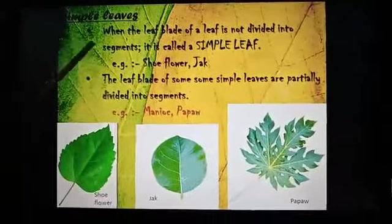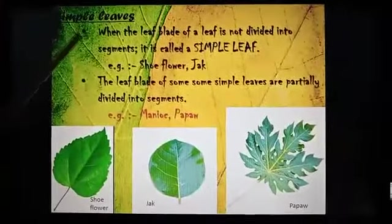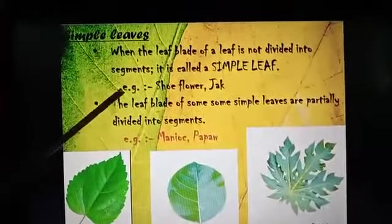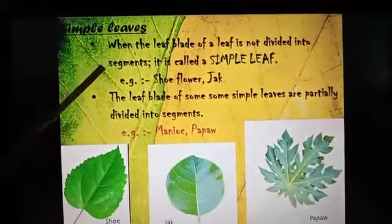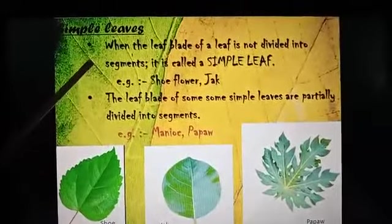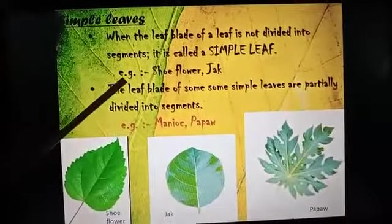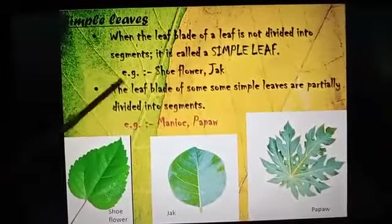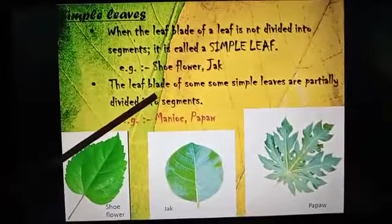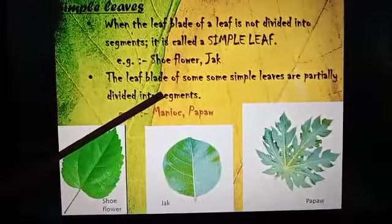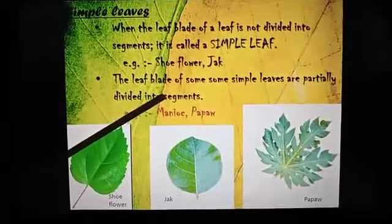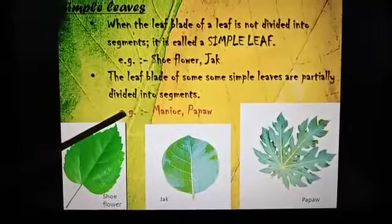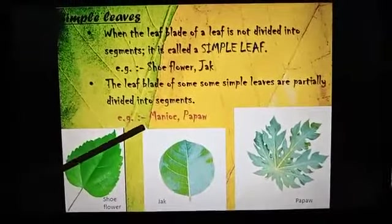Simple leaf: when the blade of a leaf is not divided into segments, it is called a simple leaf. Example: shoe flower, jack. The blade of some simple leaves is partially divided into segments. Example: mango and papaw.